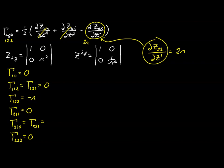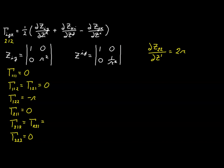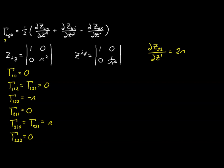For Γ₂₁₂, j is 1, so it's the second term that equals 2r; the other two are zero. This time it's positive, so one half of 2r gives us just r. For Γ₂₂₁, k is 1, and the third term equals 2r — again, one half of 2r is r. This confirms the symmetry of the last two indices.